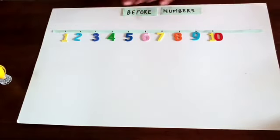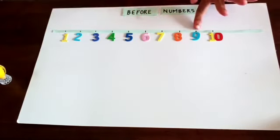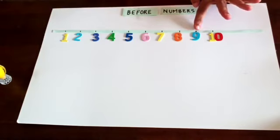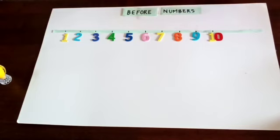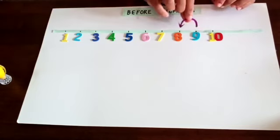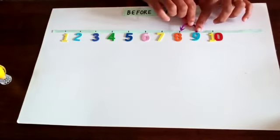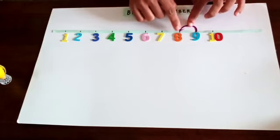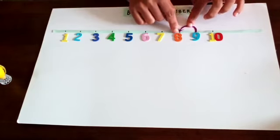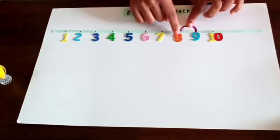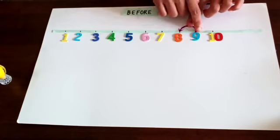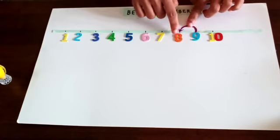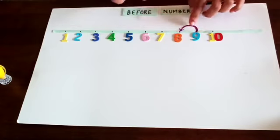One more number. What number is coming before 9? If I keep the arrow here, one jump backwards and you will reach number 8. So, number 8 comes before 9.